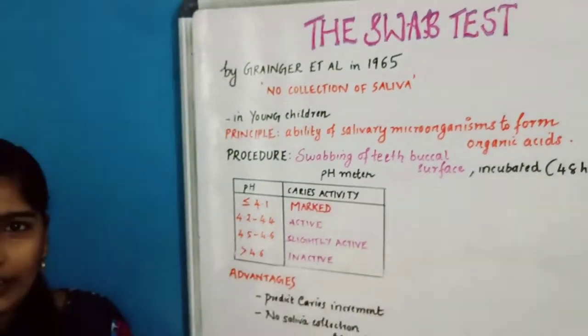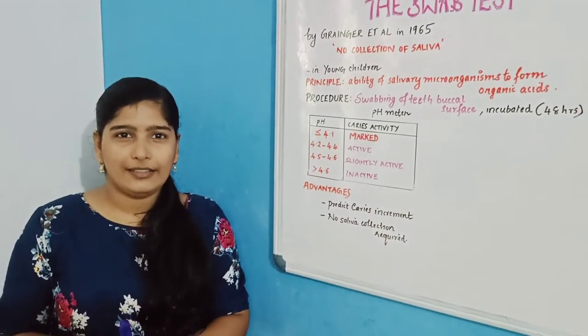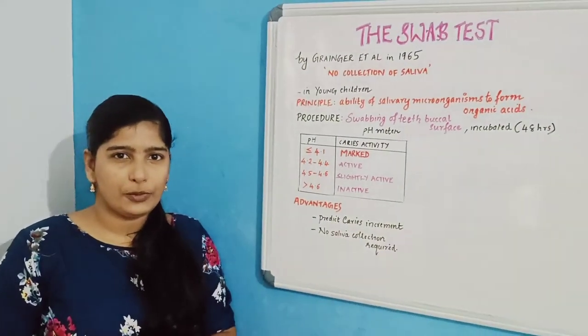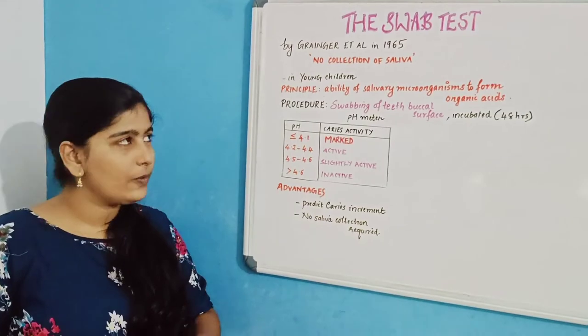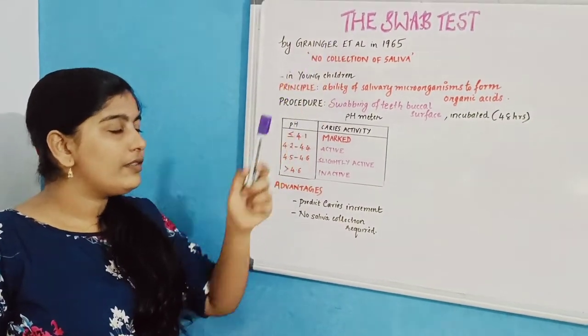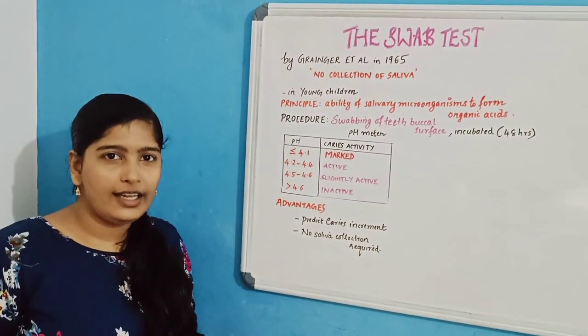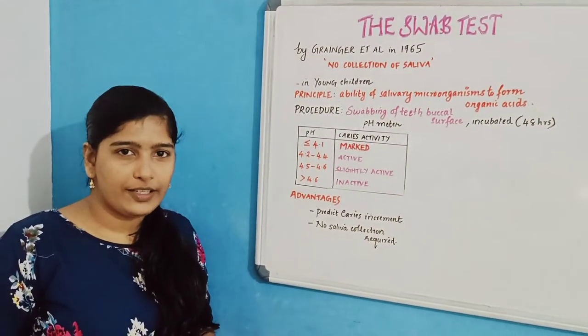Welcome to dental classes. Today we shall discuss the caries activity test, the SWAP test. The SWAP test was given by Granger et al. in 1965.